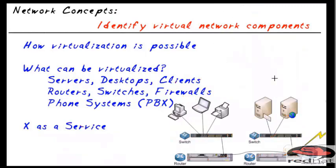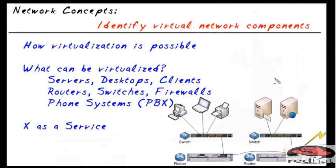Virtualization is possible because we're lying to devices, making things appear real. Why would we do it? There are cost savings, and control and security benefits. What can be virtualized? A server — yes. A desktop or client — yes. A router, a switch, or a firewall — yes.